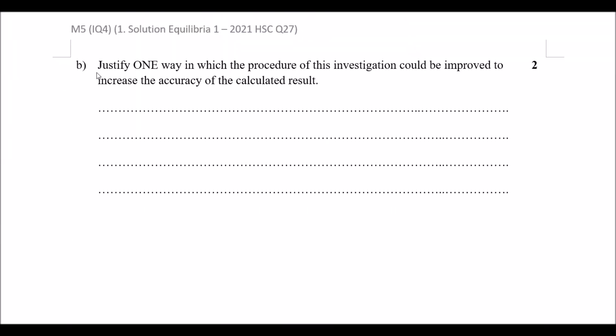We move on to question B and it says justify one way in which the procedure of this investigation could be improved to increase the accuracy of the calculated results. Before I get into what the solution for this problem, let's actually think back what is accuracy. Accuracy in science means how close are we in finding the exact result.